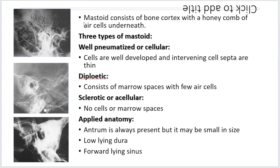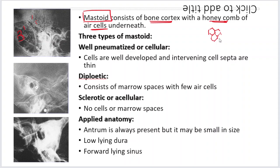So what is the mastoid? The mastoid consists of a bony cortex — a bone cortex with a honeycomb of air cells beneath. There are small septa present in between the air cells, creating a honeycomb kind of pattern. There are thin septa in between these cells.